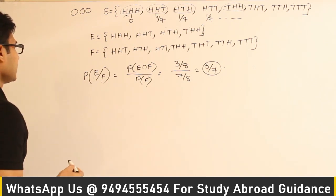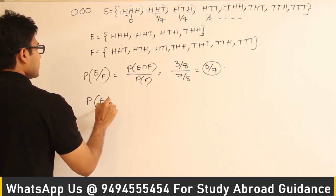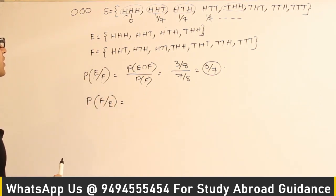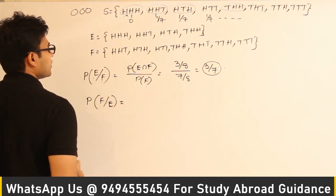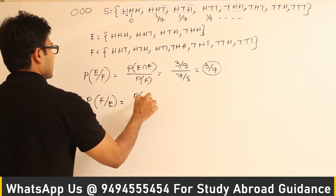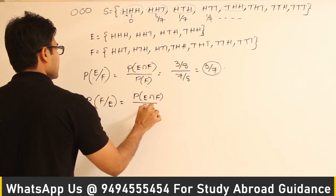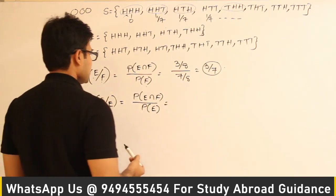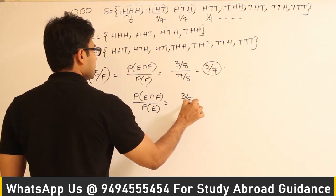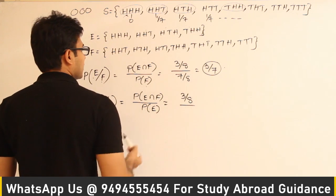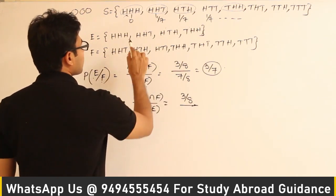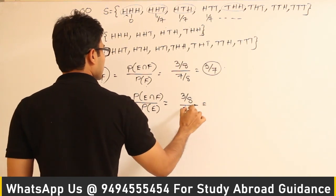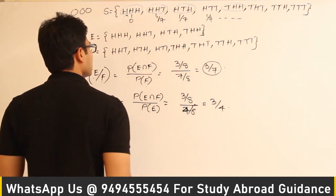Now compute P(F|E): given that 2 coins showed heads, what is the probability that at least one is a tail? Using P(F|E) = P(E∩F) / P(E). P(E∩F) = 3/8. Event E has 4 elements: HHH, HHT, HTH, THH, so P(E) = 4/8. Therefore P(F|E) = (3/8) / (4/8) = 3/4.